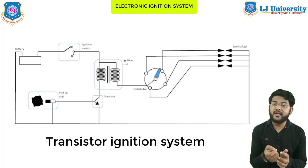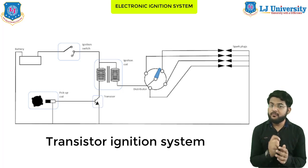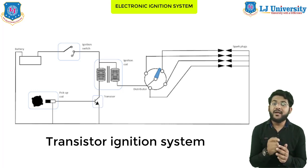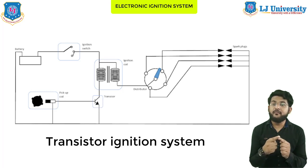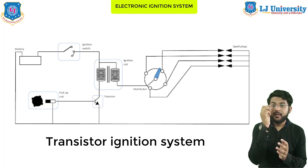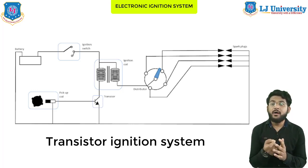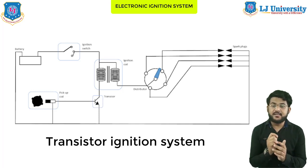The weakness of the breaker point is the wear of the plate, because the plate will always be rubbing against the cam due to friction. Over time this changes the angle and reduces ignition system performance. So let's see what transistors do in this case.